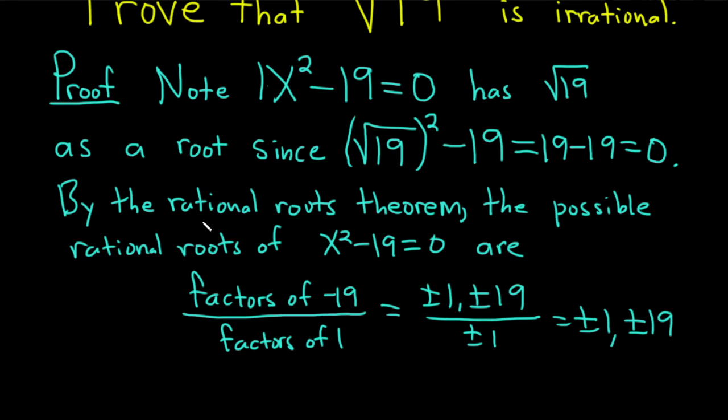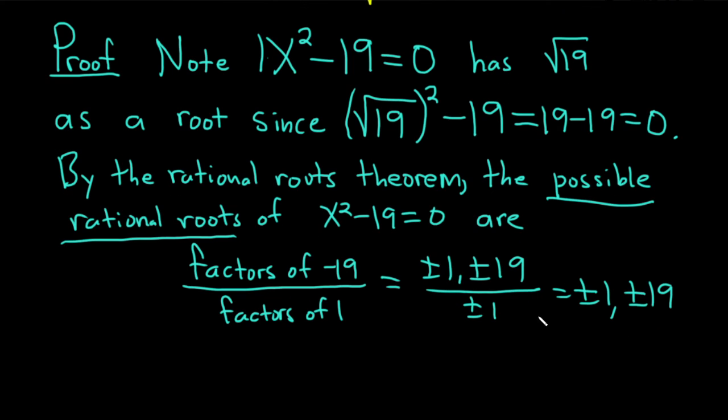So the rational roots theorem is telling us that the possible rational roots of this equation are these here. But we know that the square root of 19 is a root of this equation, and it is not among this list. So therefore, it cannot be rational, because it's not among the list of possible rational roots, and we know it is indeed a root.